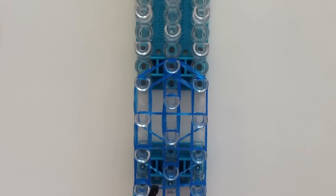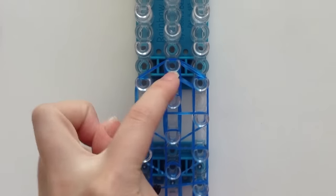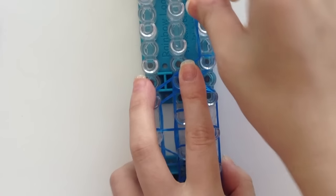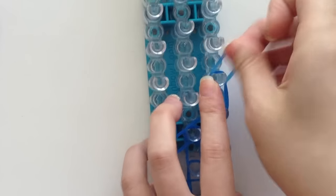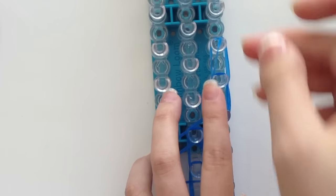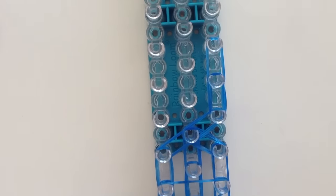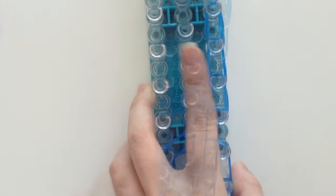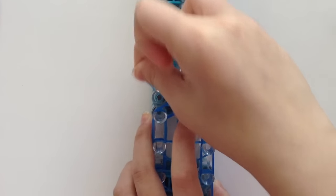Now we're going to make the tail of the fish. So go to this middle peg right here. And we're going to extend out to the right. And we're going to go up three times, taking two rubber bands at a time. And do that for the other side.